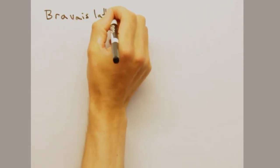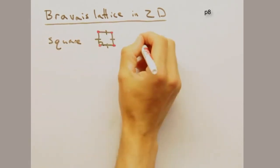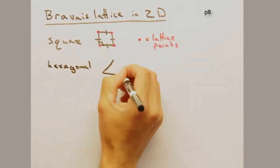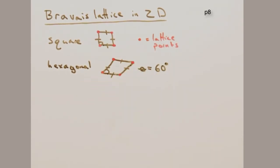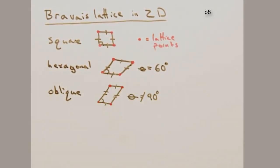In 2D, we have a set of special lattice types called the Bravais lattices that represent the unique lattices. These are the square, hexagonal, oblique, rhombics, and rectangular cells.